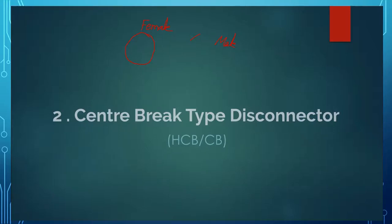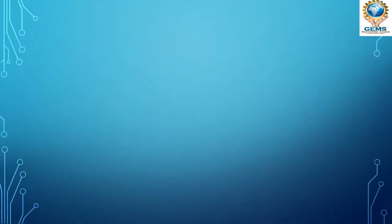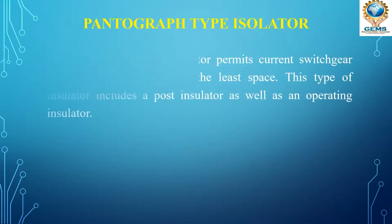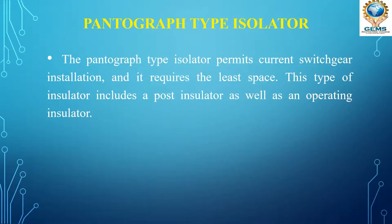The next type is the pantograph type isolator. The pantograph type isolator permits compact current switchgear installation and requires the least space. This type of isolator includes a post insulator as well as an operating insulator.